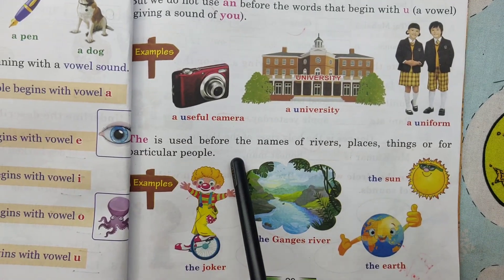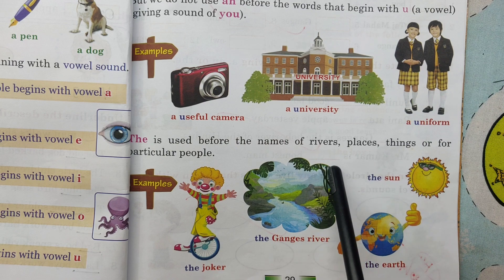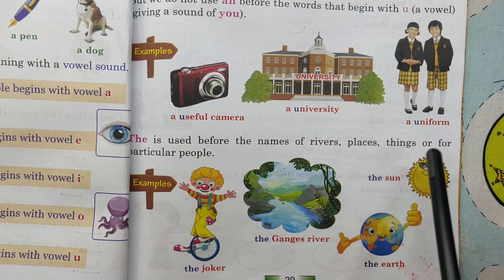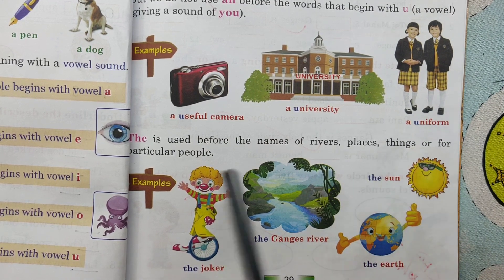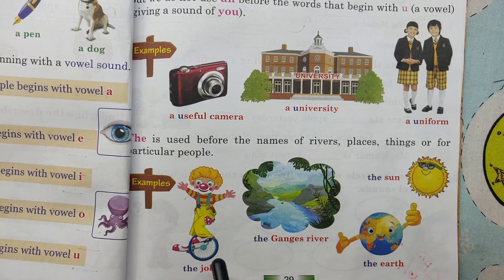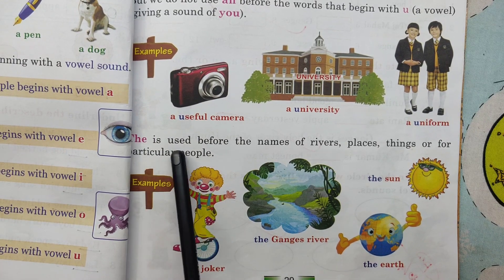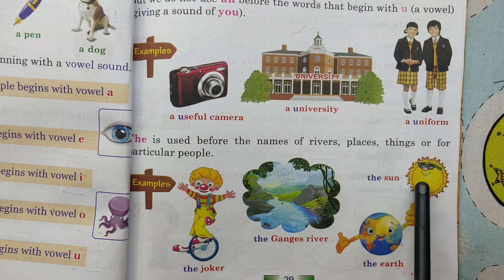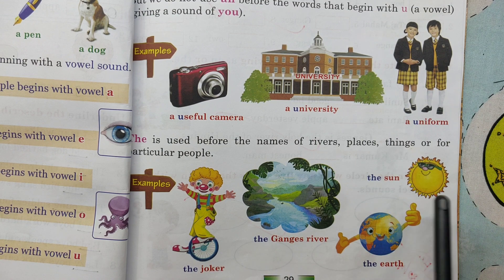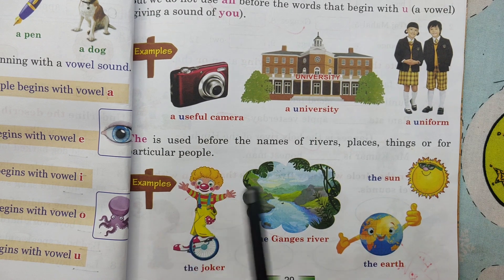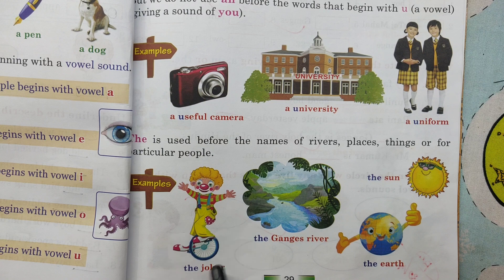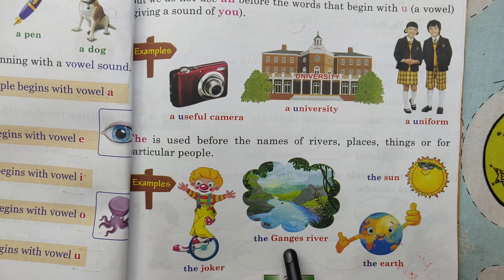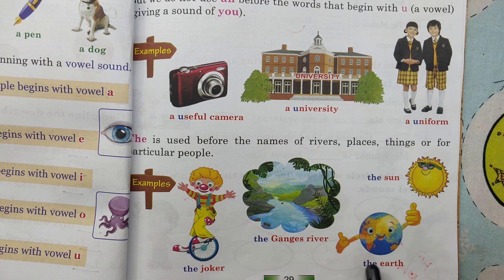THE is used before the names of rivers, places, and things for particular people. Examples: The Joker, the Ganges River, the Sun, the Earth.